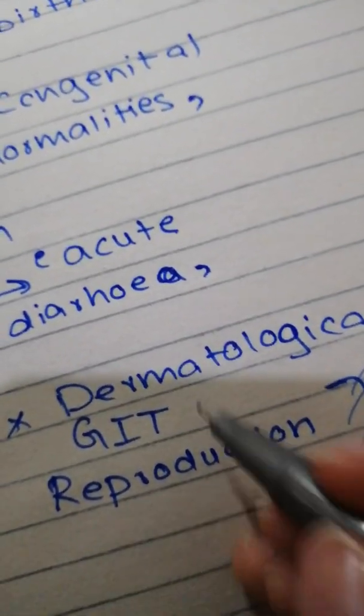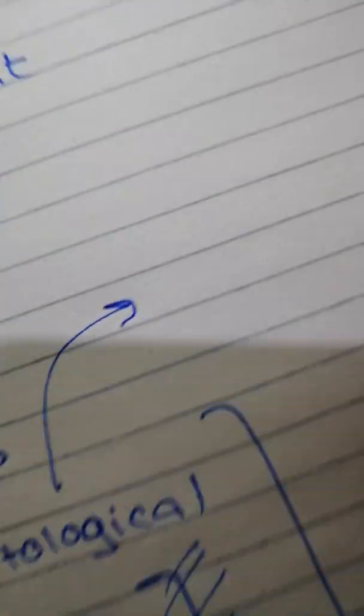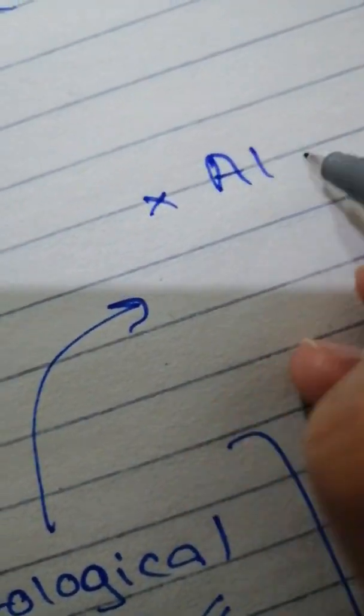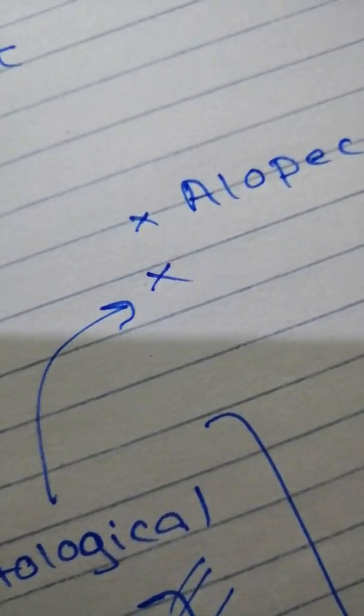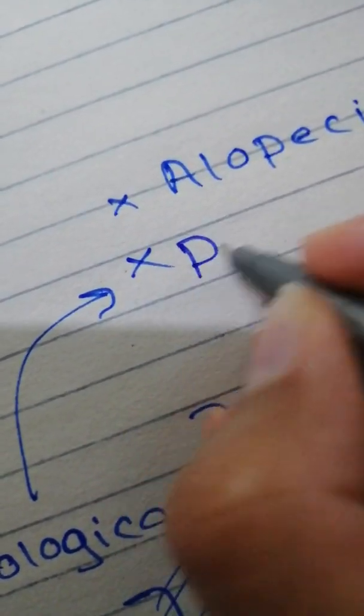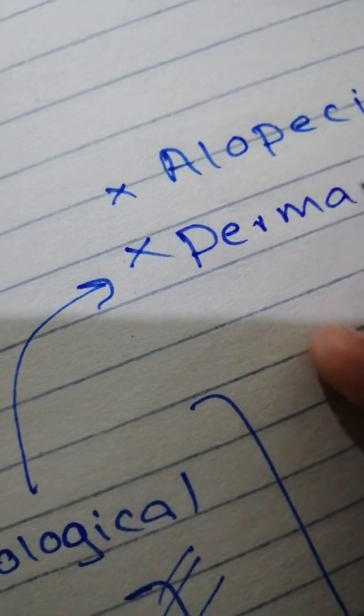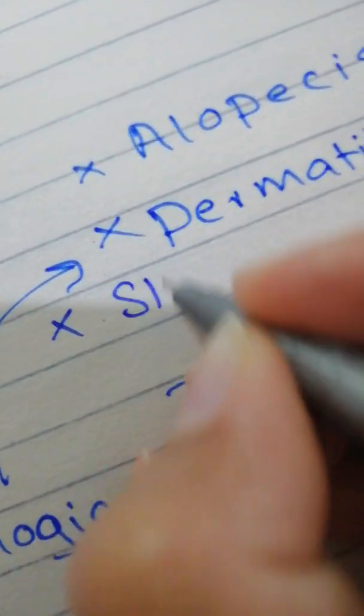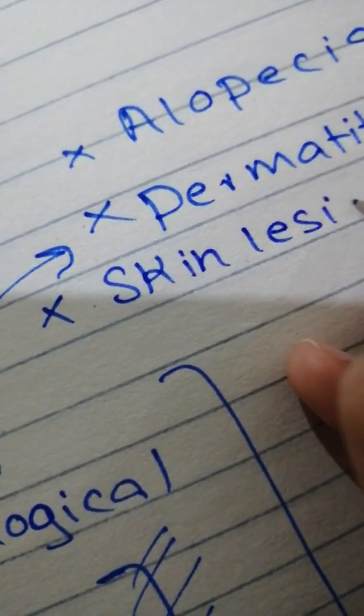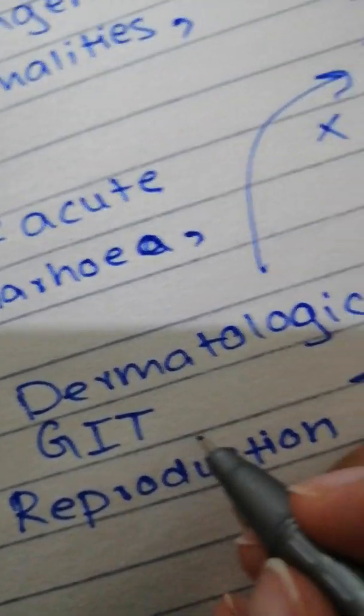If there is a deficiency of zinc, there are dermatological consequences like alopecia, which is hair fall, and then we have dermatitis and skin lesions. There is impaired spermatogenesis.